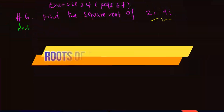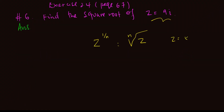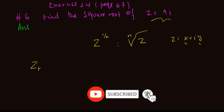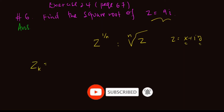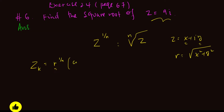In general, to find the nth root of any complex number z, where z is equal to x plus iy, where x is the real part and y is the imaginary part, we will use the formula: z_k is equal to r to the power of 1 over n, where r is the modulus of the complex number, times the cosine of theta, which is the principal argument of the complex number.